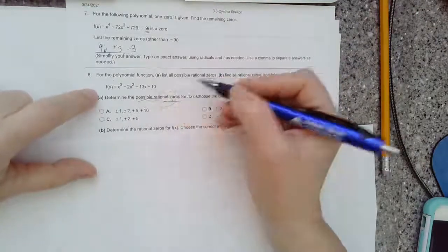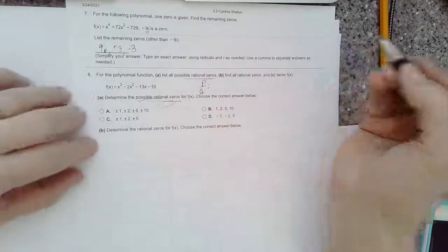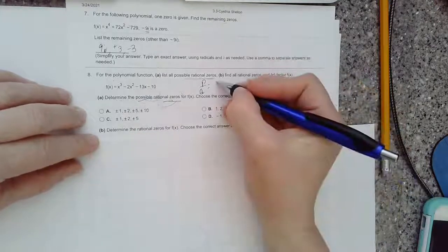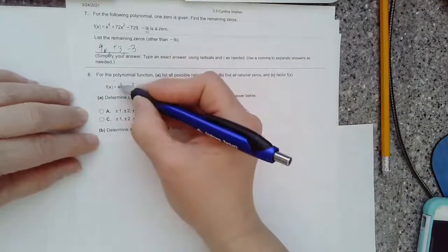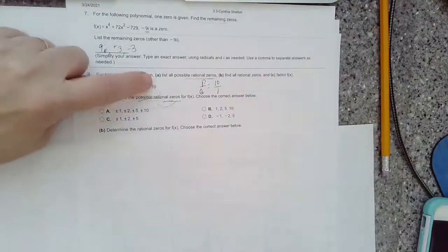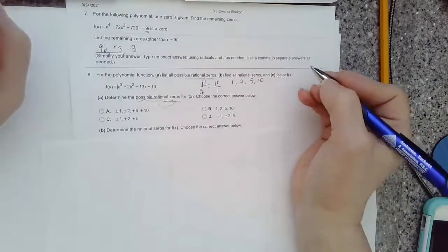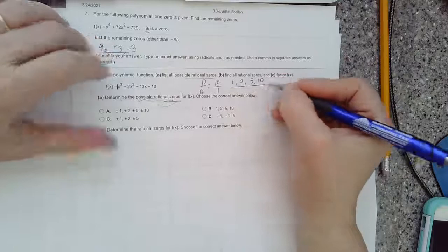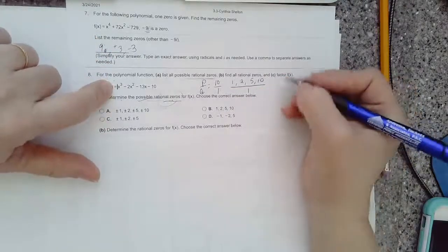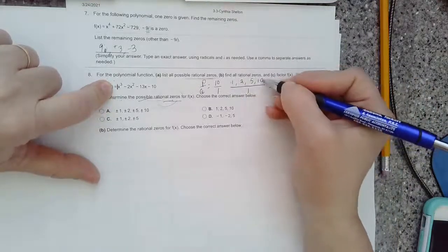It's the P over Q rule. It's the factors of the constant, so the factors of 10 divided by Q is the factor of the lead coefficient, 1. So you list anything that will go into 10 evenly, which is 1, 2, 5, and 10. Those are the factors of 10. The lead coefficient here is just a 1, so that won't make a lot of fractions. It'll just be 1 over 1, 2 over 1, 5 over 1, 10 over 1, since we're just dividing by 1.